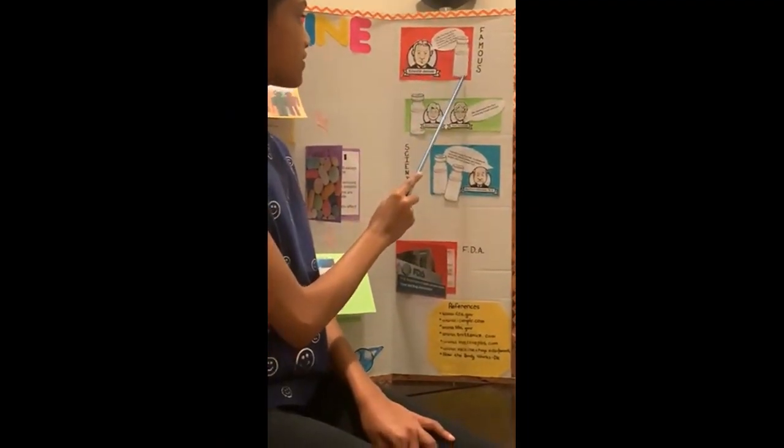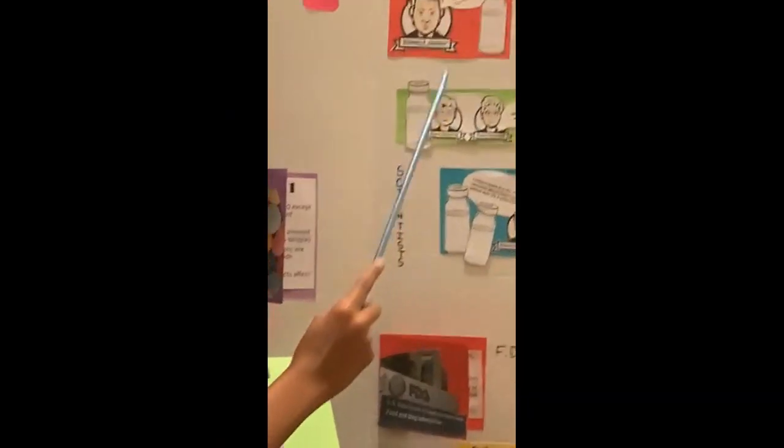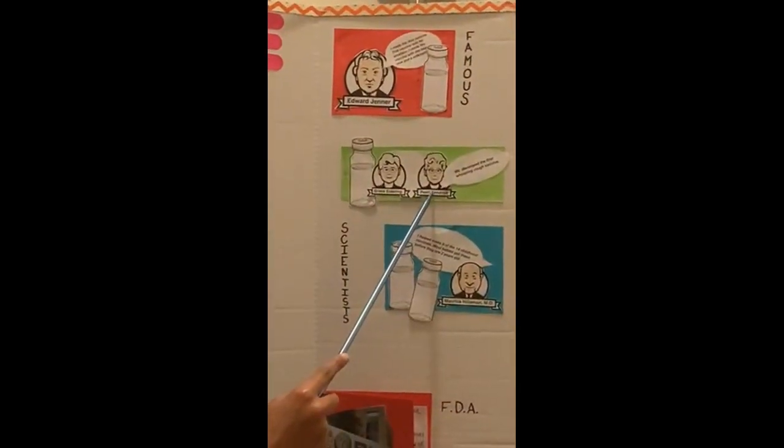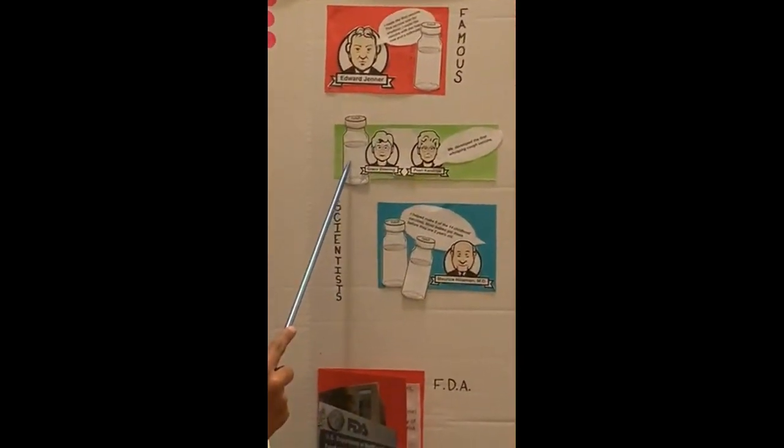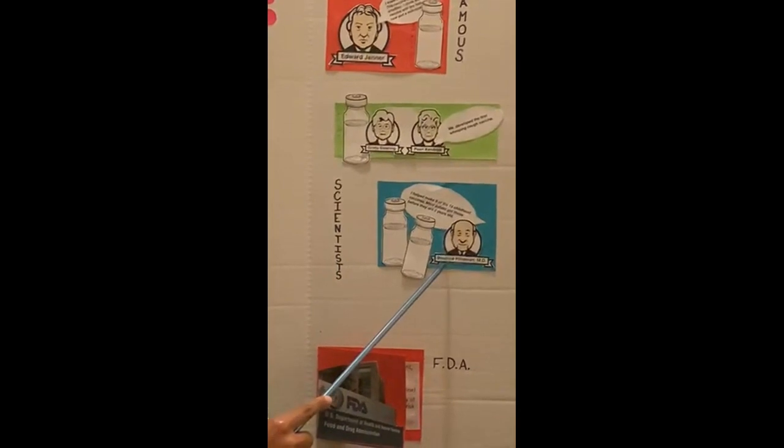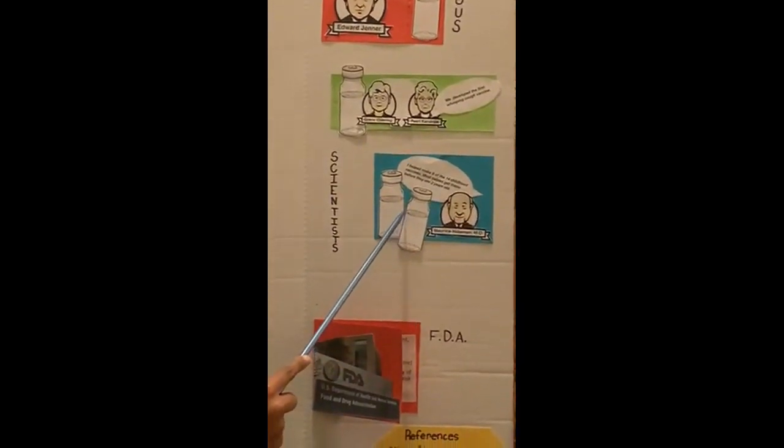Edward Jenner created the first vaccine. It was for smallpox. Grace Alderling and Pearl Canvia created the first whooping cough vaccine. And lastly, Maurice Hillman helped make nine of the 14 childhood vaccines.